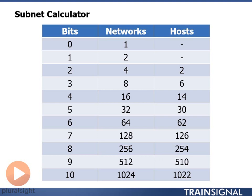We make three columns. In column one we put bits — these are the number of bits we'll be counting in binary in the IP address or in the mask. The second column is going to be networks, and the third column is going to be hosts.